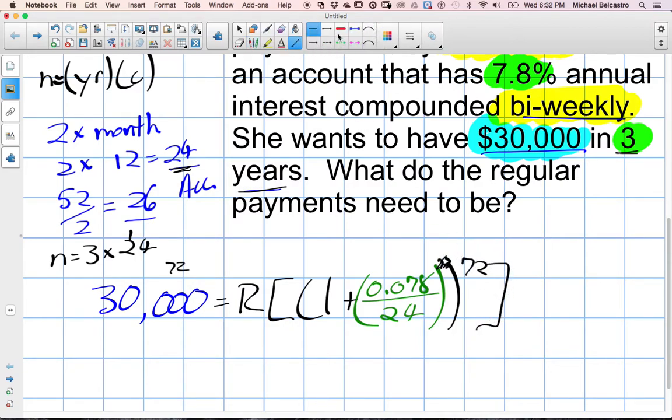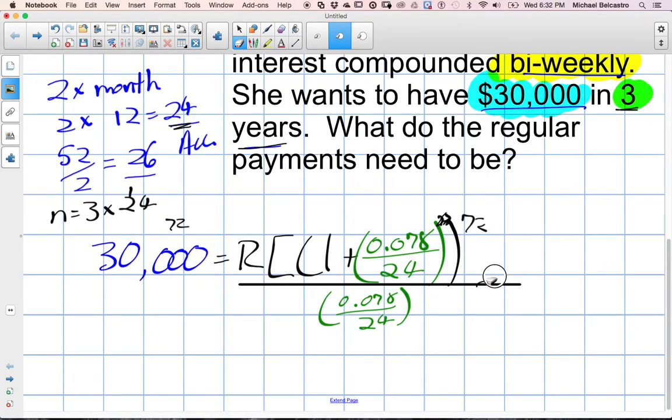And then finally, everything is going to be divided by what we had in green there. Again, that little fraction, 0.078 over 24. So there's the minus one at the end. Oh, thanks. You're right. Did I write that on top? I did. Okay, good. Minus one. There you go.